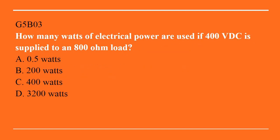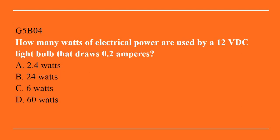G5B03: how many watts of electrical power are used if 400 volts DC is supplied to an 800 ohm load? A. 0.5 watts. B. 200 watts. C. 400 watts. Or D. 3200 watts. Correct answer is B: 200 watts. G5B04: how many watts of electrical power are used by a 12 volt DC light bulb that draws 0.2 amperes? A. 2.4 watts. B. 24 watts. C. 6 watts. Or D. 60 watts. Answer is A: 2.4 watts.